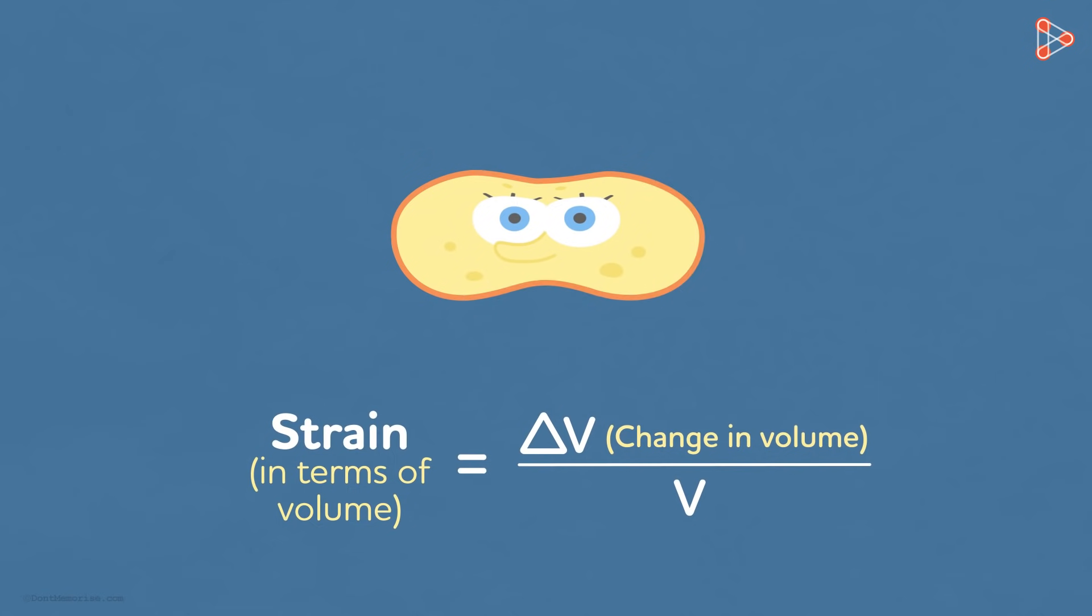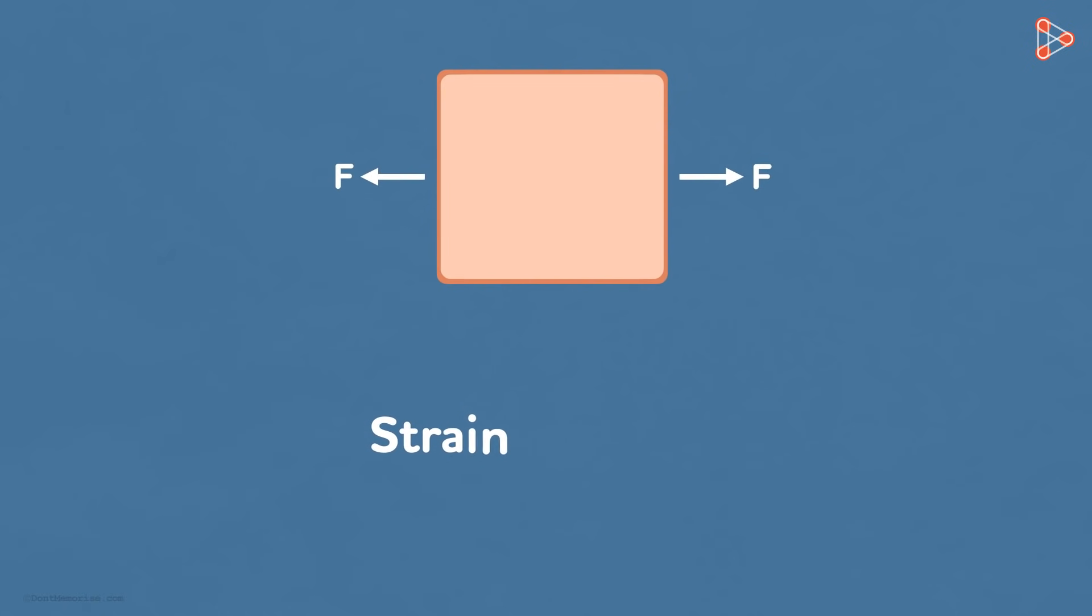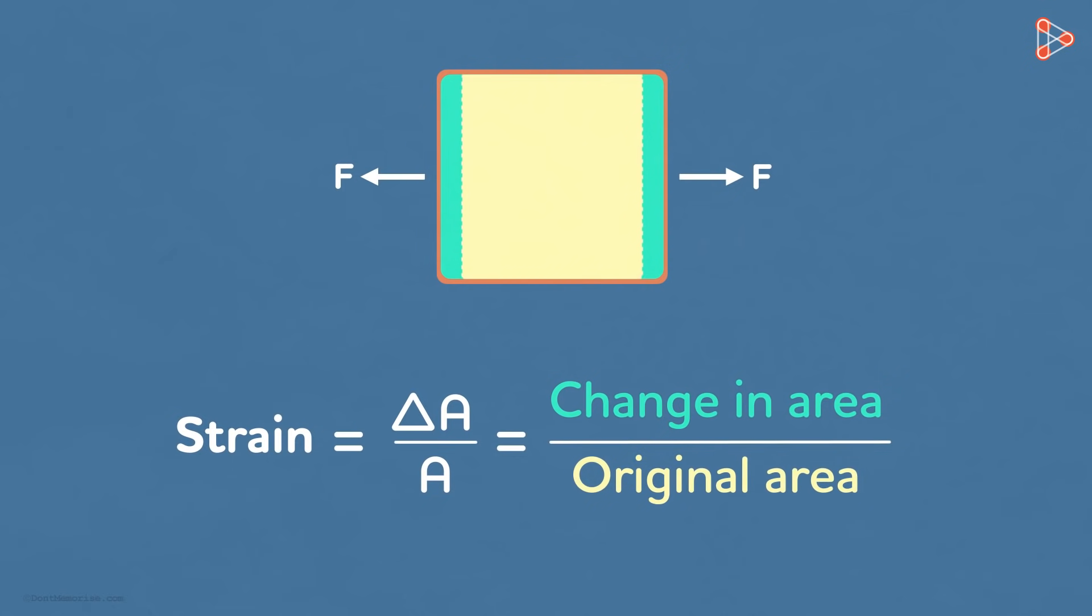Let us take another example where a thin rubber sheet is stretched equally from the opposite sides with a force F. That will result in a change in the area. So the strain experienced by the rubber sheet is delta A over A. Delta A is the change in area of the sheet and A is the original area of the sheet.